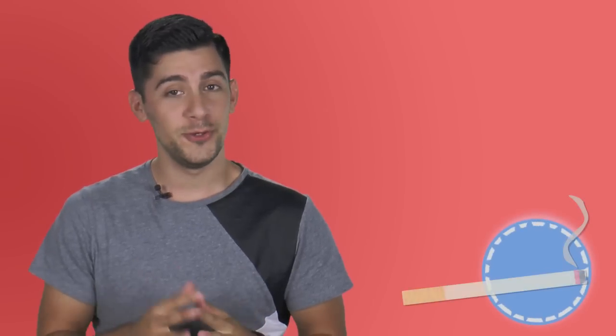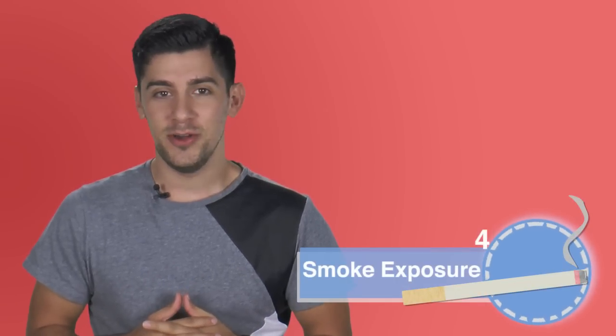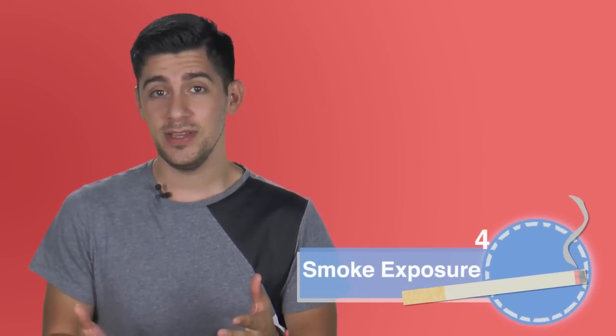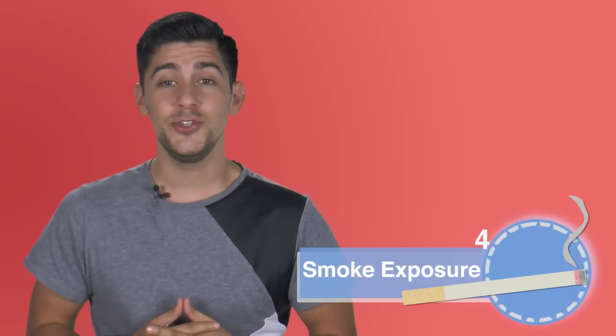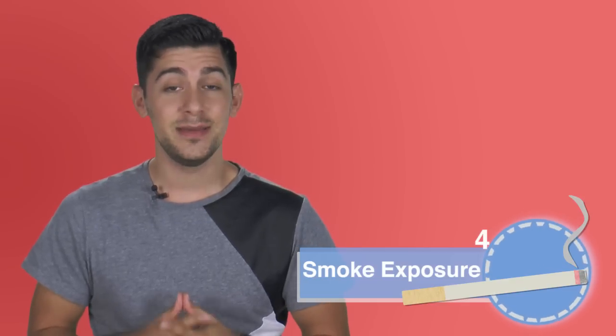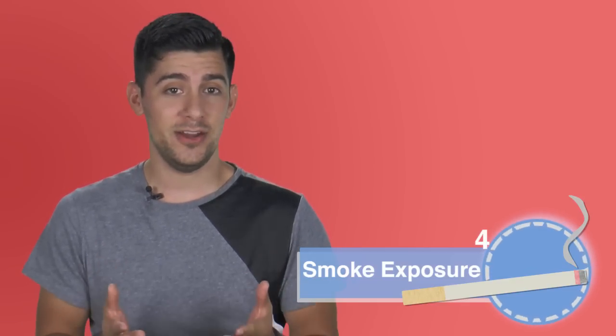4. Exposure to Smoke. Prolonged exposure to first-hand or second-hand smoke can seriously damage the lungs in two major ways. First, tobacco smoke harms the microscopic hairs, known as cilia, that line the airways.